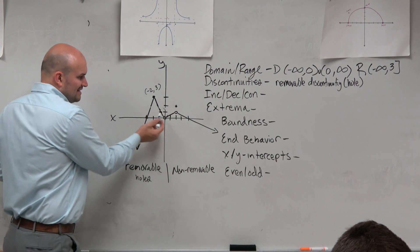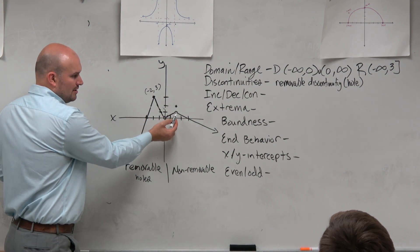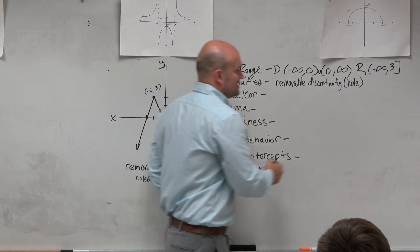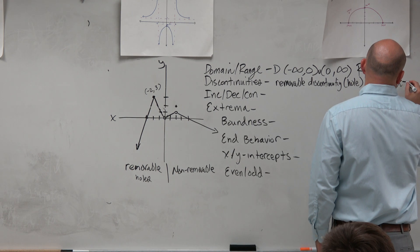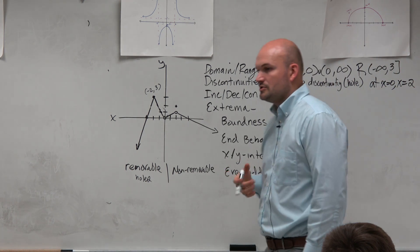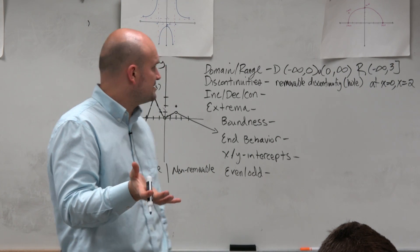So we can identify the discontinuity of the graph as far as in the domain is going to be at 0 and at 2. So we could say at x equals 0 and x equals 2. So just make sure when you guys are identifying this, you're giving a location of where those discontinuities are in place.